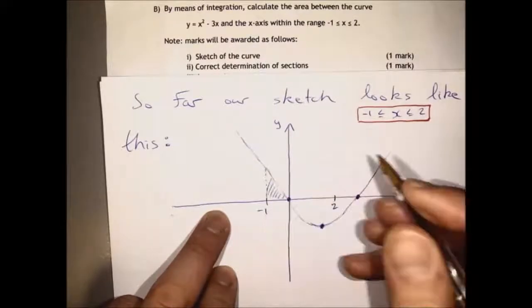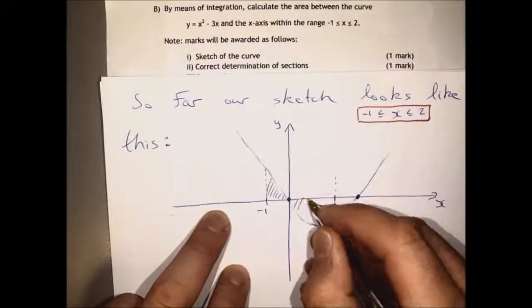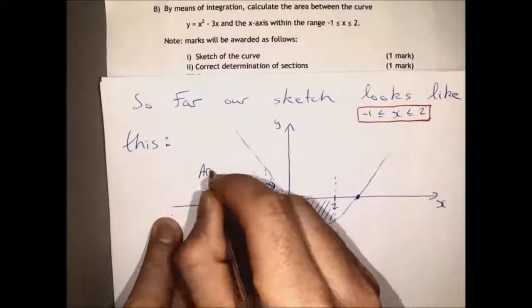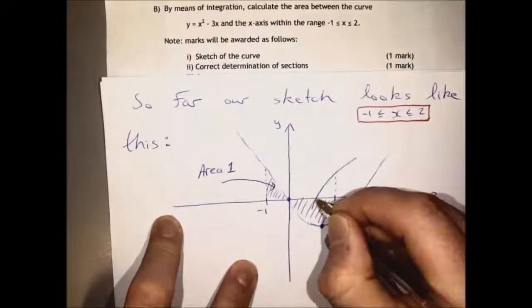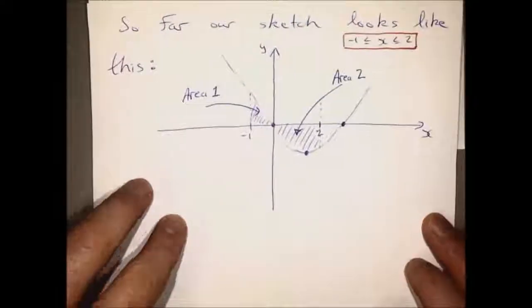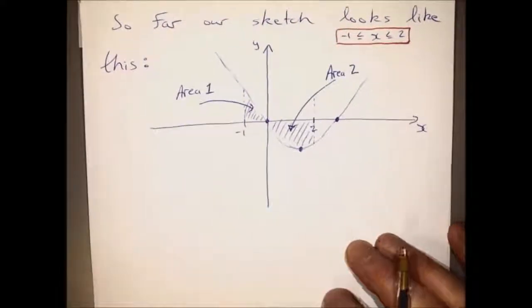two and x equals minus one will bound our areas. And there's area one, we can call that, and area two. And those are the correct areas for integration.